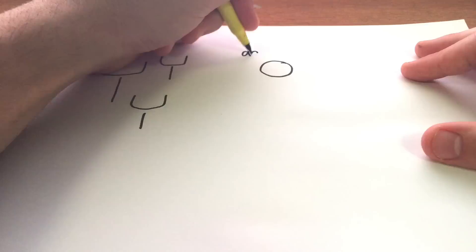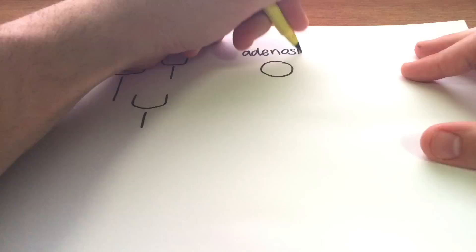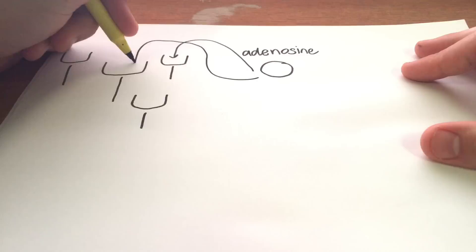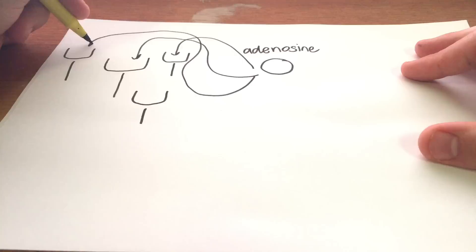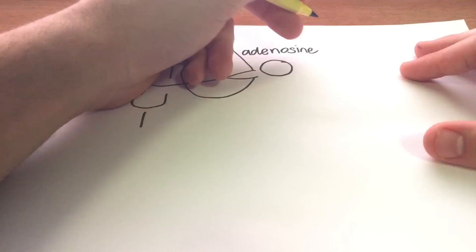So adenosine is a chemical which occurs naturally throughout our brain. I'm going to use a little circle to resemble it here. Now adenosine is the only sort of chemical in the brain that is allowed to bind to its receptor. It has a certain structure that only the receptor will recognize.